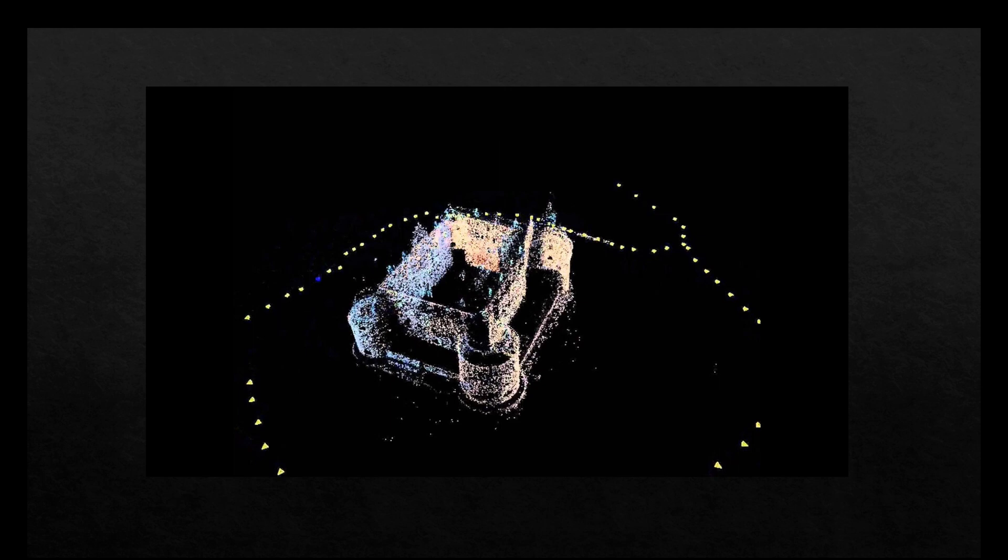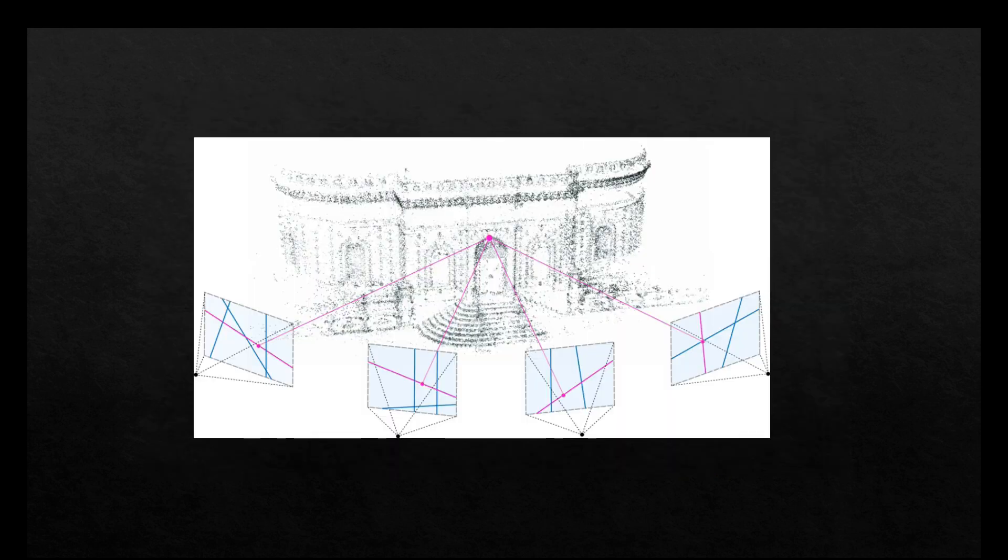Finding structure from motion presents a similar problem to finding structure from stereo vision. In both instances the correspondence between images and the reconstruction of 3D objects needs to be found. To find correspondence between images, features such as corner points are tracked from one image to the next.